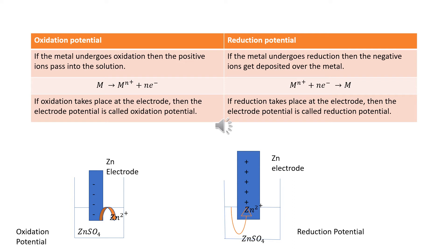From this we conclude: if the solution pressure is greater than the osmotic pressure of ions, then at equilibrium the metal has a negative charge with respect to the solution. If the solution pressure is less than the osmotic pressure of ions, then at equilibrium the metal has a net positive charge with respect to the solution, and the metal gains its weight.